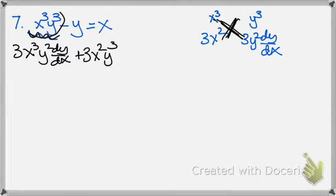That's just the derivative of the first term. The derivative of the negative y is negative 1 dy dx, and the derivative of x is 1.